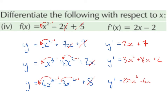In our next example, we have the function to be x squared plus 7x plus 9. Again, we're going to bring down the power in front, so that's going to give us 2x. And we're going to reduce the power by 1. 2 take away 1 is 1, so just 2x. Next, we have plus 7x, so we can just cancel out the x, and we're left with plus 7. And then we have a 9, which will give us 0, or we can just cancel it out. So the derivative of x squared plus 7x plus 9 is going to be 2x plus 7.